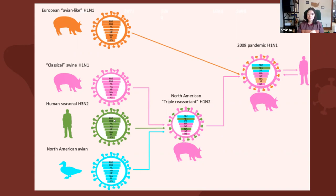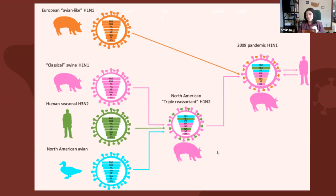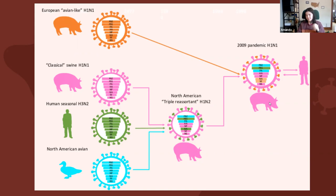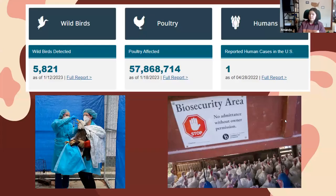This is what happened in 2009. There were spillover events in 1957, 1968, and 2009. The 2009 event specifically was a triple reassortment between birds, pigs, and humans. You get classic H1N1, human seasonal H3N2, and a North American avian influenza virus all combining within a host, taking viral segments from each one — giving you this triple reassortment which turned into H1N2. Then the European avian-like H1N1 circulating at the time combined with this triple reassortment to create a pandemic version of H1N1.